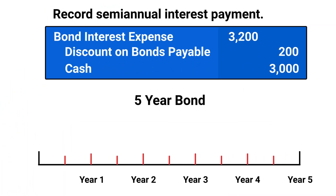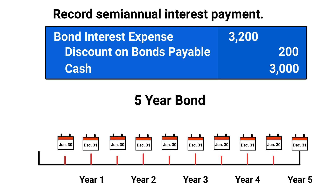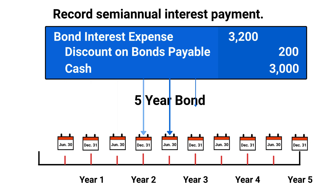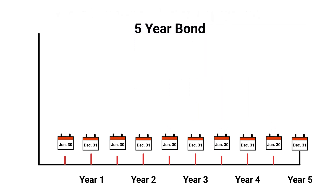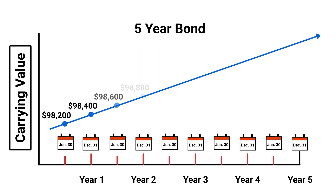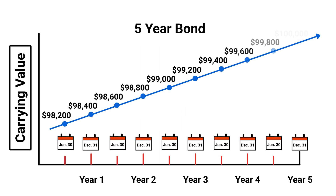This exact entry is made on the semi-annual interest dates of June 30th and December 31st for each of the next 5 years of the bond's life. Recording each of these semi-annual entries reduces the unamortized discount and increases the carrying value of the bonds.